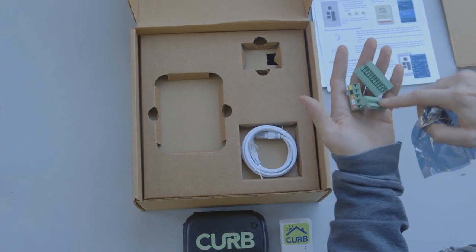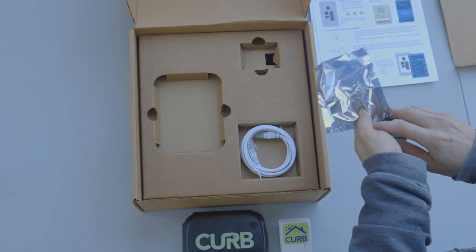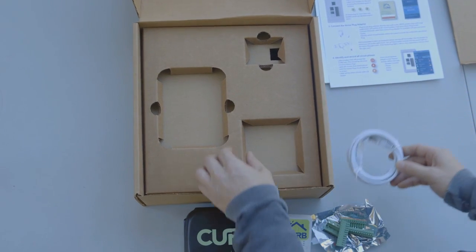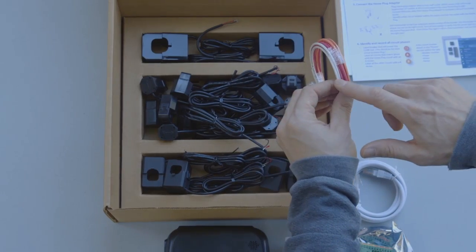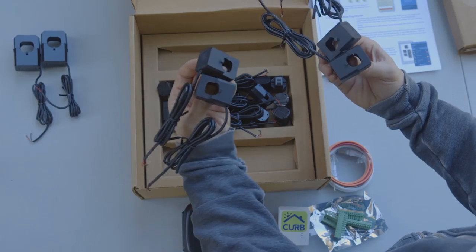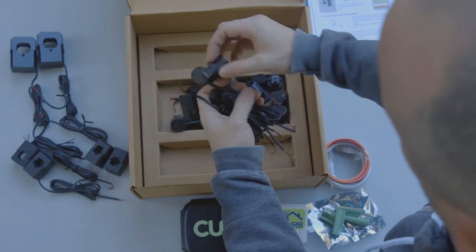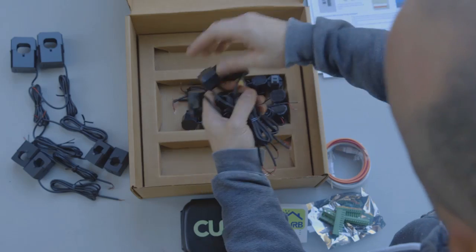The package should also include one cat5 ethernet cable, three voltage connection wires, one voltage wire connecting block, three CT clamp connecting blocks, two large 100 amp CT clamps, four medium 50 amp CT clamps, and 12 small 30 amp CT clamps.